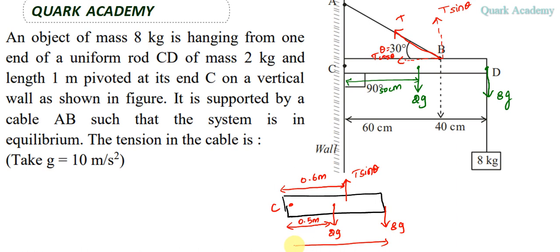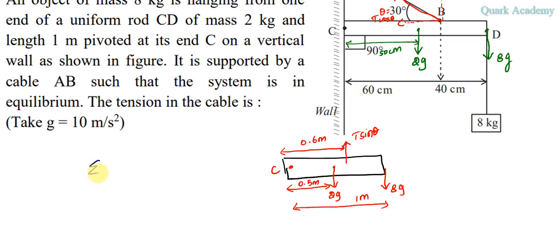And the third one is here, 8g, and this is 1 meter from the pivot. Now these are the forces which are active. Since the system is in equilibrium, the net torque should be equal to zero. This 2g and 8g, these two gravitational forces, tend to rotate the rod in the clockwise direction, but the T sine theta will try to rotate the rod in the anticlockwise direction, so both the torques are in opposite directions.